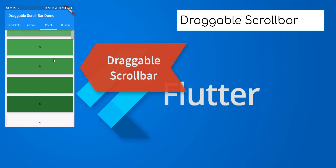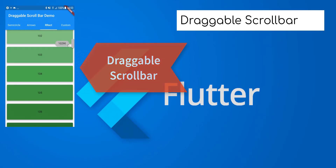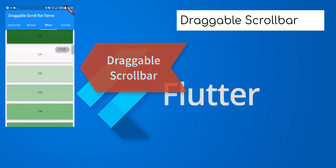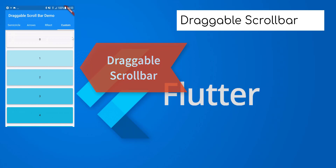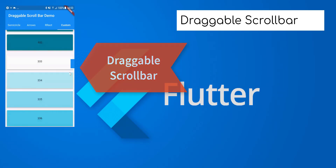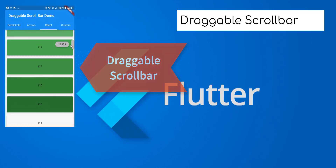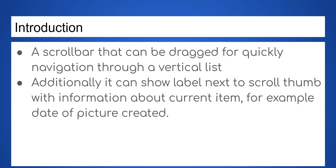As you can see from the diagram here, this is what we are going to learn today. This package is for a scrollbar that can be dragged for quickly navigating through a vertical list. Additionally, it can show a label next to the scroll thumb with information about the current item, for example the date a picture was created.